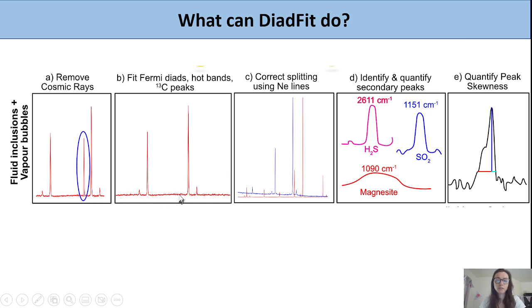Let's look at the workflow for fitting spectra with the Fermi Dyad. The first thing it can do, if your instrument hasn't already, is remove cosmic rays.